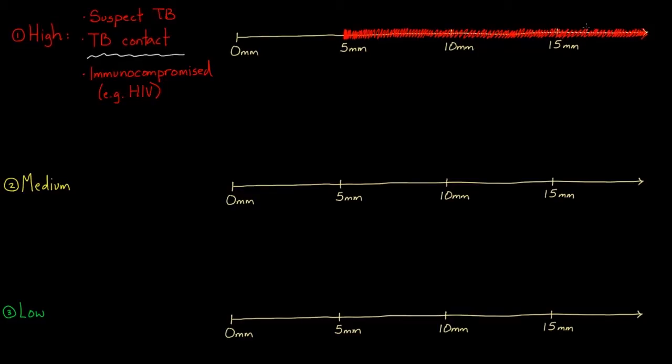So this red stuff that I'm filling in, this is the positive range, positive anywhere in here. And anything below that, I'm going to write it in white, down here, this would be negative. So anything below five. And if it's exactly five, then that's still positive.